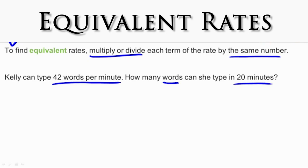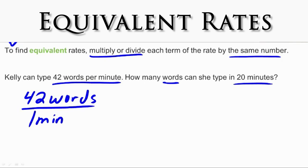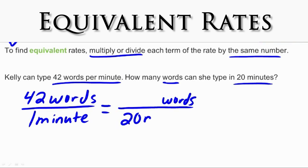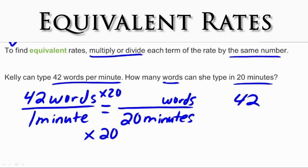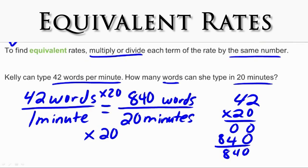We know that Kelly can type 42 words per minute — that's 42 words in one minute. We're trying to figure out how many words she can type in 20 minutes. We set up the ratio the same way on both sides: words on top and minutes on the bottom. Looking at the denominators, we go from one minute to 20 minutes by multiplying by 20. Whatever we do to the bottom, we do to the top. So we multiply the top by 20: 42 times 20 equals 840. This tells us that Kelly can type 840 words in 20 minutes. This is how you find equivalent rates.